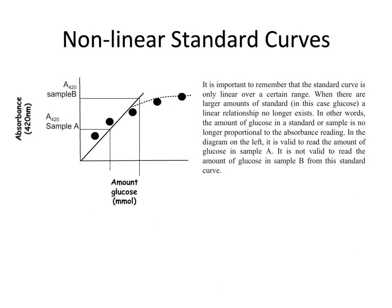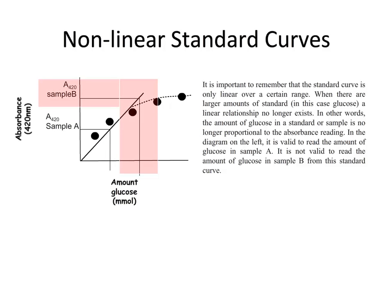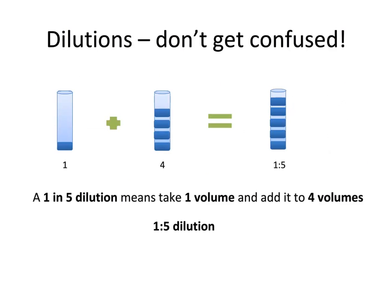At some concentrations, the relationship between absorbance and concentration ceases to be linear, so it is important to remember that the standard curve is only linear over a certain range. When there are larger amounts of standard — for example, when there is too much glucose — a linear relationship will cease to exist, and the amount of glucose in a standard is no longer proportional to the absorbance reading. In this diagram, it is valid to read the amount of glucose in sample A, which is at lower concentrations where the standard is linear, but it is not valid to read the concentration of glucose in sample B, as the standard curve in that section is no longer linear.